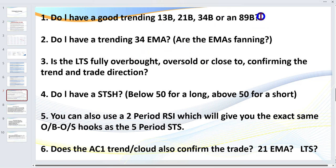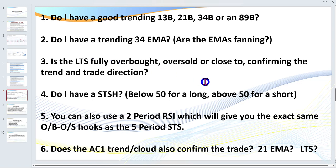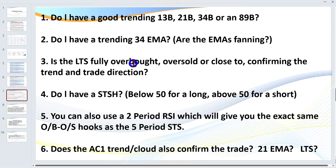We want to see the EMAs all basically trending together. When you have a deeper pullback to, say, the 89 EMA, quite often you're not going to have a slingshot trade — a T2 — because as we pull back towards the 89, sometimes it can be a very deep pullback and the long-term stochastic will be against the trade. The long-term stochastic should be fully overbought, fully oversold, or close to it, confirming the trend and trade direction. If I'm just outside the 80/20 zone, that's okay.